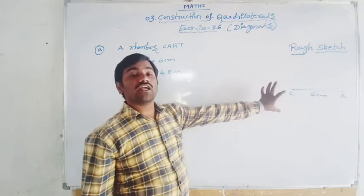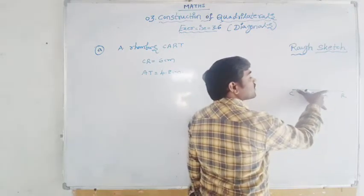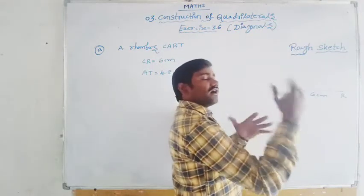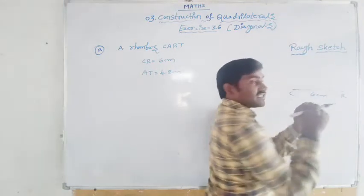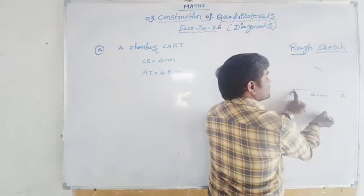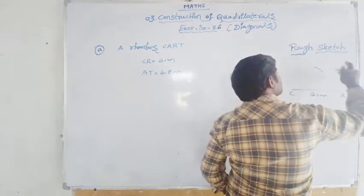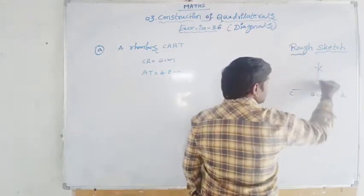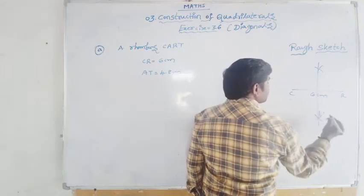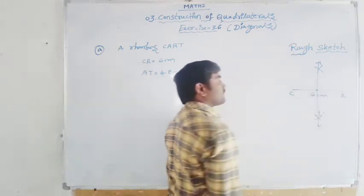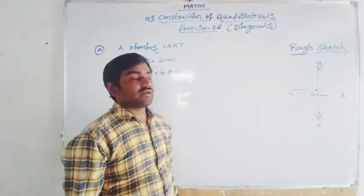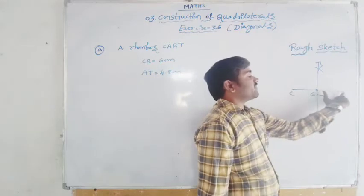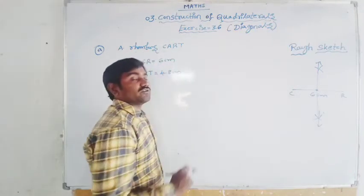Now you have to draw the perpendicular bisector of it. For that, you have to take more than half of the length of 6 centimeters — more than half of 6, you take 3.5 or 4 or 5 centimeters as radius. You take more than half of the length as a radius on the compass. Draw the arcs from C, up and down, and also outside. The same, without changing the radius, you have to draw the arcs from R also, so that both arcs will be intersecting each other. From there, you draw a line and you get a perpendicular bisector. This perpendicular bisector exactly divides it into 2 equal parts of 3 centimeters each.